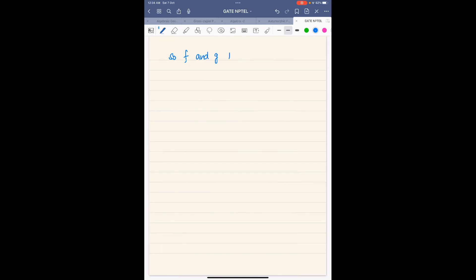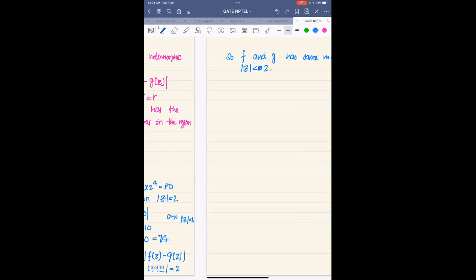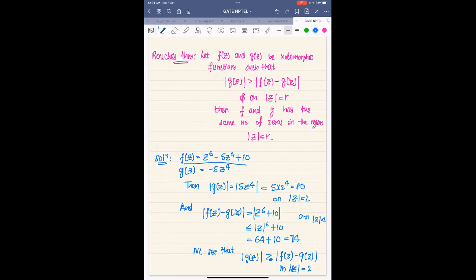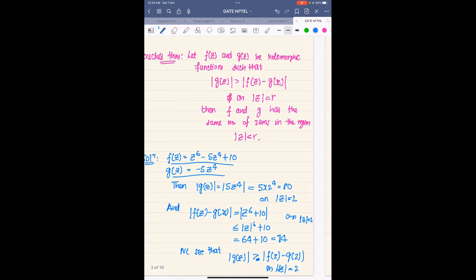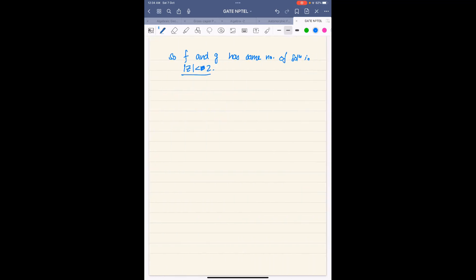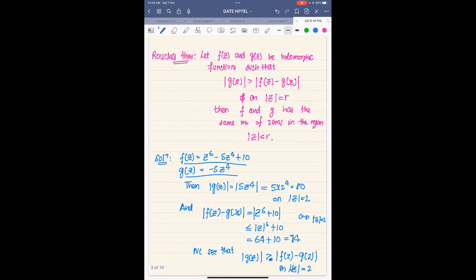f and g has same number of solutions in |z| less than 2. Now we wanted to find the number of solutions of f, and we know that f and g have same number of solutions. And how many solutions does g have in this region |z| less than 2? Four solutions counting with multiplicity. This polynomial has 4 zeros.